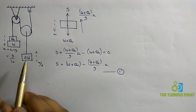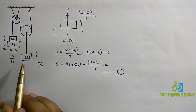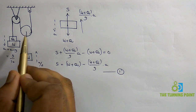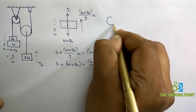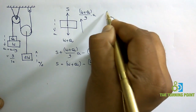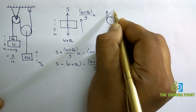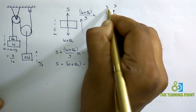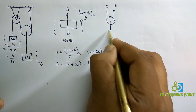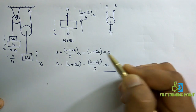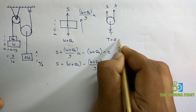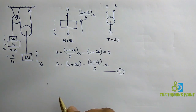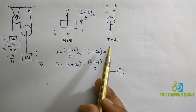Now let us consider the free body diagram of the movable pulley. Along the string on each side there will be tensile force S, and along the rope on the other side there will be tensile force T. This pulley is under dynamic equilibrium when T equals 2S, so T equals 2S.